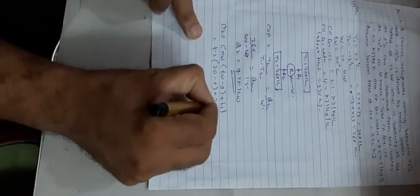4.2 times 20 minus 0 plus latent heat 335. From this, we will get the small q2, 419 kJ per kg.